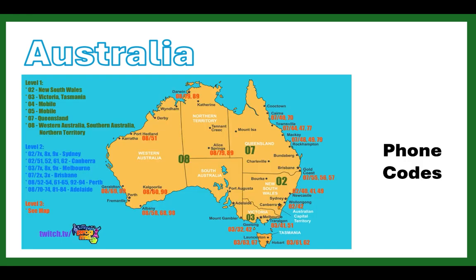Phone codes are occasionally useful. The important ones to remember: 07 is Queensland, 02 is New South Wales and ACT, 03 is Victoria and Tasmania, and 08 is Northern Territory, South Australia, and Western Australia. A diagram with second-digit breakdowns can be handy, though you don't see phone codes that often in Australia.